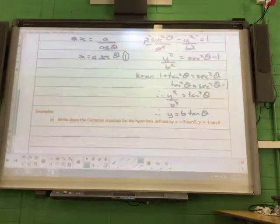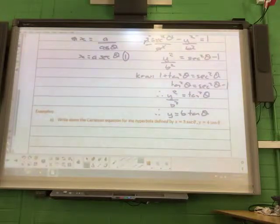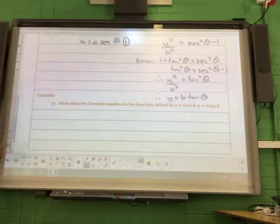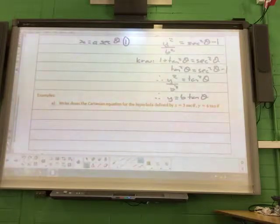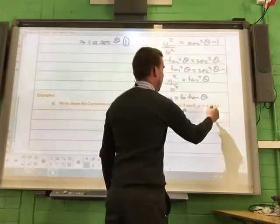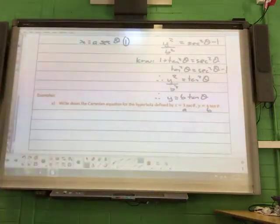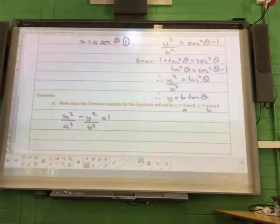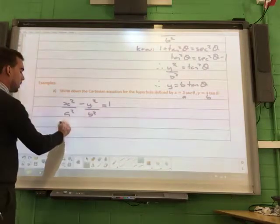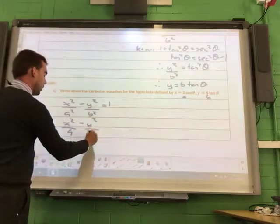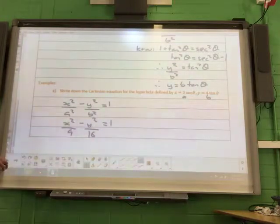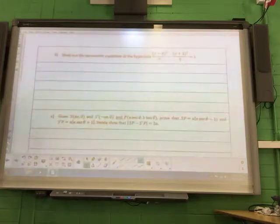So your parametrics for your hyperbola, x equals a sec theta and y equals b tan theta. However, your angle cannot equal 90 degrees or can't equal pi over 2 because that's undefined for tan. That's why you've got the break in the hyperbola. So write down the Cartesian equation for the hyperbola defined by that. x is a sec theta and y is b tan theta. So x squared over a squared, take away y squared over b squared is 1. That's your standard Cartesian form. All you need to do is substitute a and b in there. So x squared over 9, take away y squared over 16 is 1. Any questions there? That's the parametric equation.